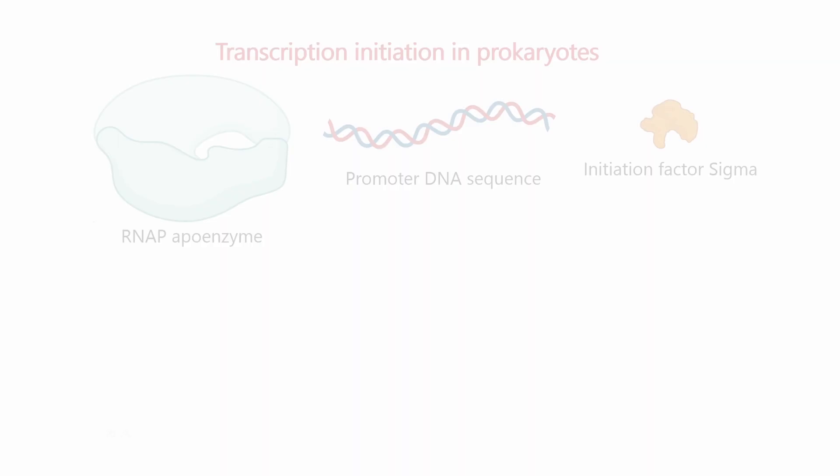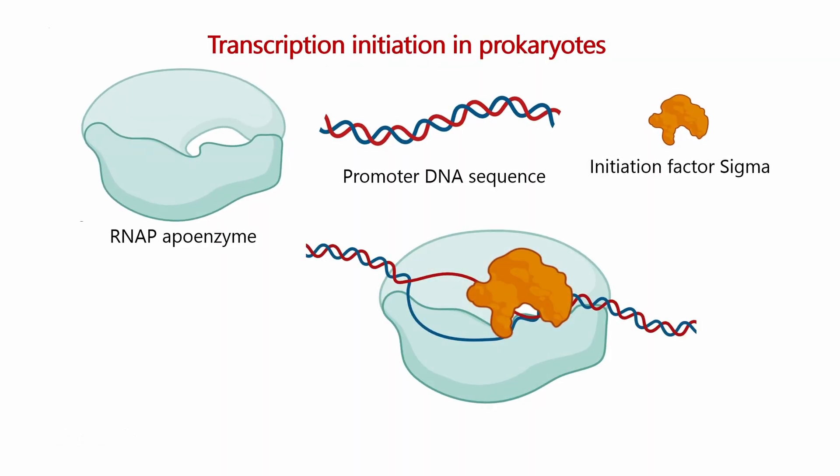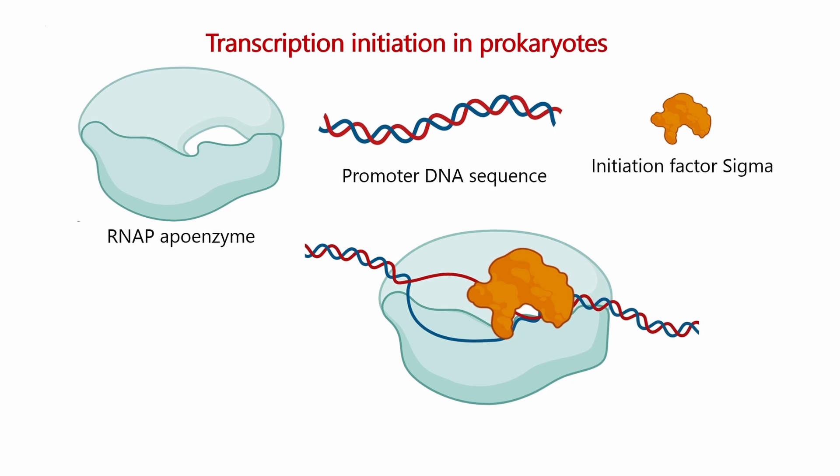MTB as a pathogen goes back and forth from its active form of infection to latency inside the lung macrophages. Our lab started working specifically on transcription, as it has been shown that whenever it shifts from latency to its active form, there is a sudden transcriptional outburst. That is how we came into the topic of how transcription is regulated in Mycobacterium tuberculosis.